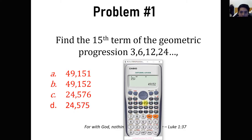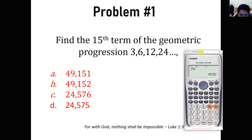Whenever you want to find a different term — for example the 20th term — simply change the input to 20 and you'll get the value of the 20th term. You can also find the 8th term the same way. So for 15, the answer is 49,152, which is letter B.